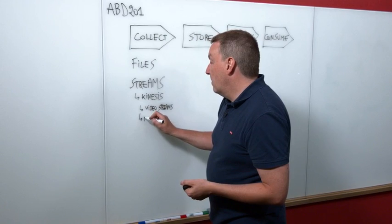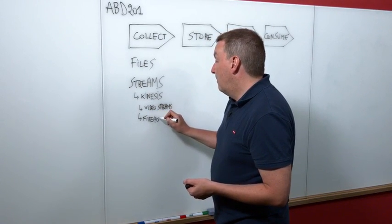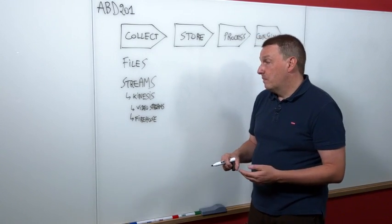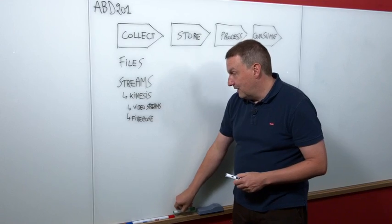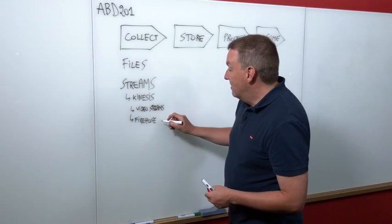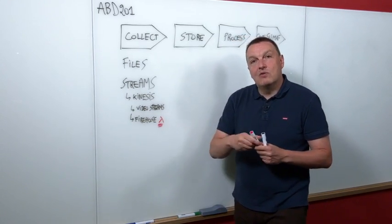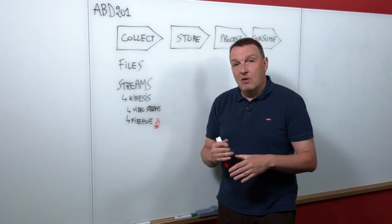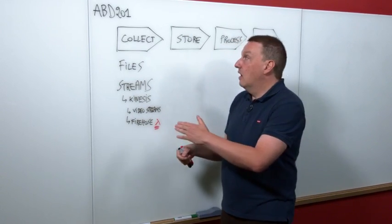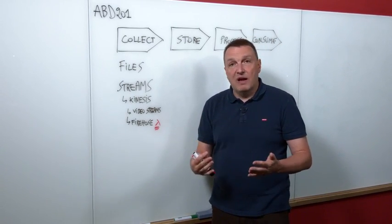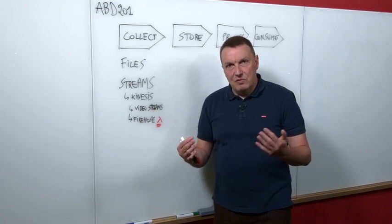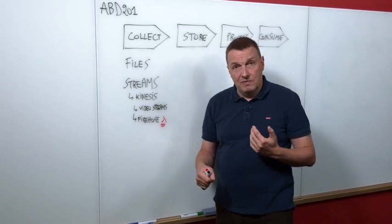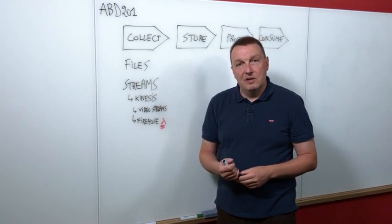But you could just also use maybe Kinesis firehose, which is again a very easy way to move data into S3 or into Redshift, for example. And there's a cool feature here that I want to highlight, and I'll put that in red because it's important, is that you could use Lambda here. You can run Lambda function on the messages that are in transit in Firehose. So how does that relate to machine learning? Well, maybe you could be cleaning data at the collection stage. Maybe you could be looking for missing values, just weird values. Maybe you could be already performing some cleanup and validation on your data before it even gets to storage. So I think that's a pretty interesting way to do it.